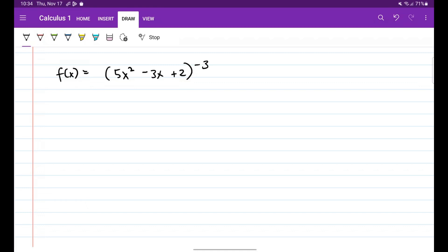Okay, so welcome to Quick Calculus. In this video we will be solving an example involving the chain rule. We have here f(x) is equal to 5x squared minus 3x plus 2, all raised to negative 3.